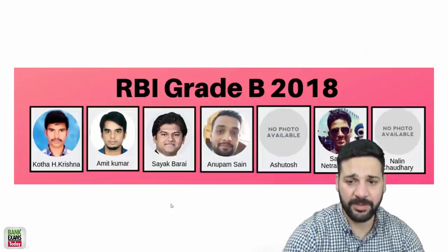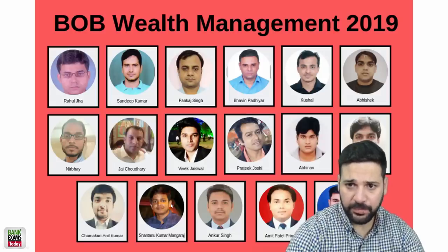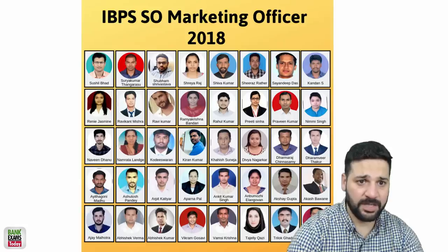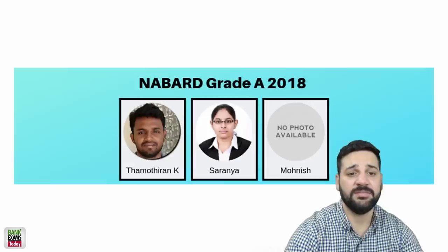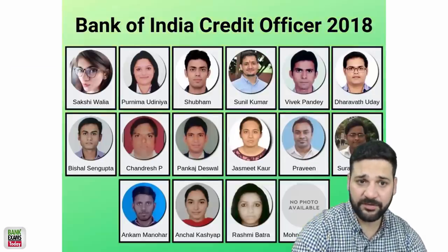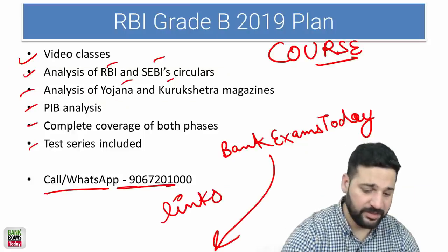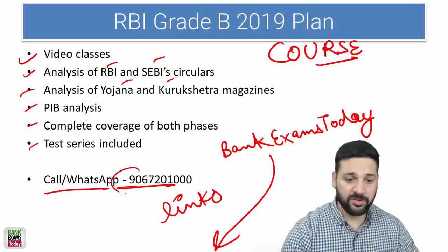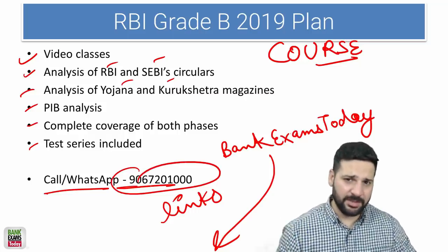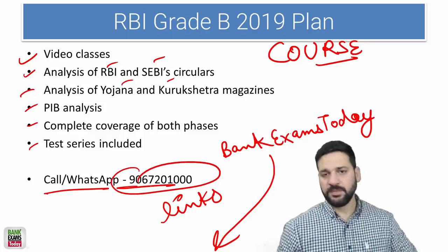These are the list of students who cracked RBI Grade B 2018, Bank of Baroda Wealth Management, IBPS ISO Marketing, SEBI Grade A, Nabard Grade A, Vijaya Bank Credit Officer, Bank of India Credit Officer 2018 using our courses. If there is any doubt, there is my number, please WhatsApp me. So that's all for today students. All the links are available in the description. Thank you.